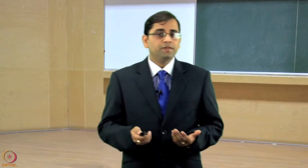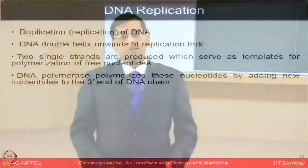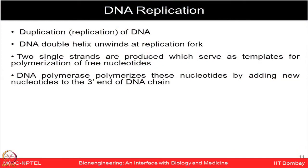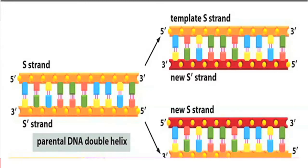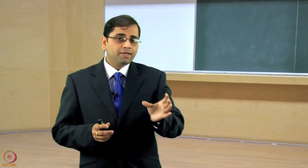Now, how does DNA make multiple copies? In DNA replication, the double helix starts unwinding at the replication fork, producing two single strands that serve as templates for polymerization of free nucleotides. DNA polymerase starts polymerizing nucleotides by adding new nucleotides to the 3' end of the DNA chain. From the same DNA, two copies are made — from the template strand, a new strand is synthesized, giving us two DNA molecules as a result of replication.